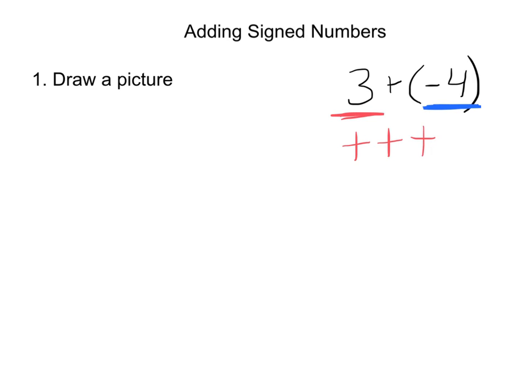Here we have a negative four, so what do you think we're going to draw for that? Four negatives. We'll draw them right underneath — one, two, three, four negatives. That's step one: draw a picture.